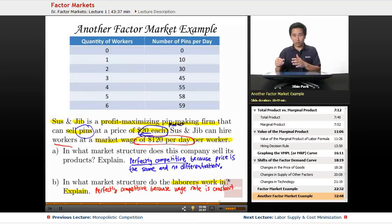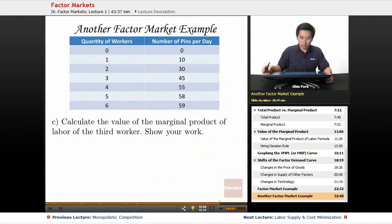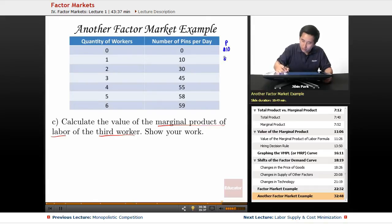Part C: Calculate the value of the marginal product of labor of the third worker and show your work. We have to figure out first what is the price of a pin. Let's say the price is $10, so all the way down, no matter how many you sell, each pin costs $10.